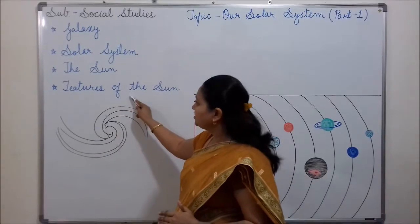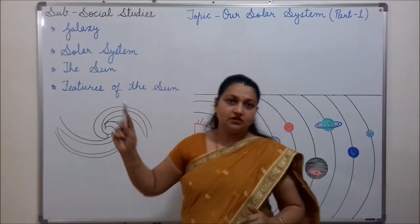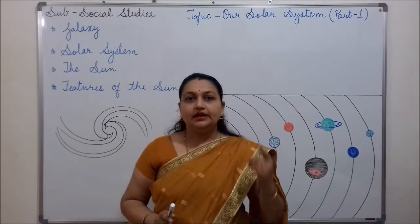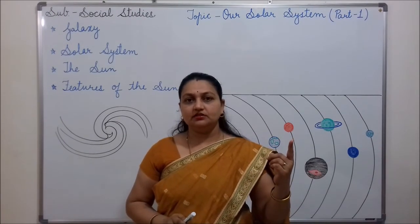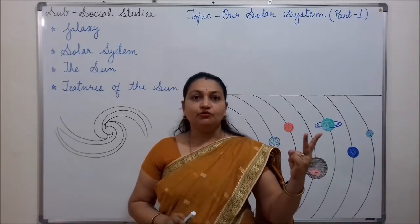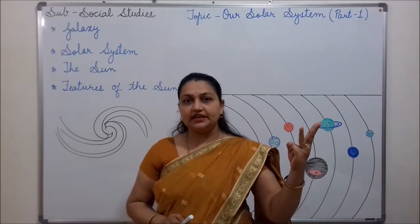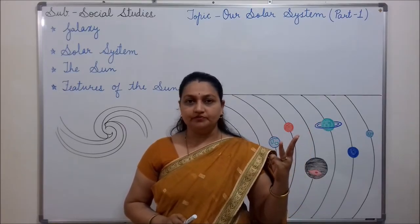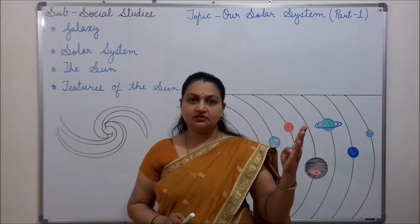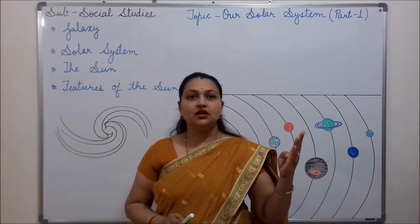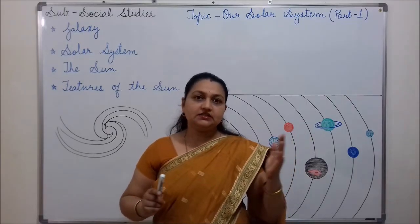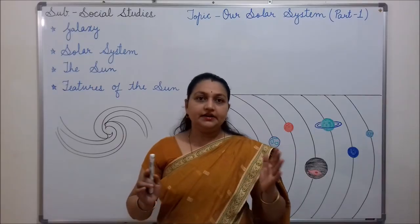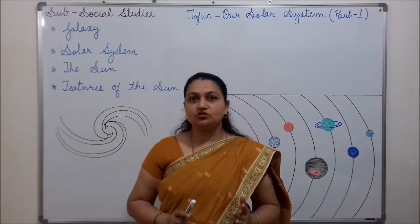Now come to the features of the sun. The sun helps us in many ways. It gives us heat and light. It gives us vitamin D. It provides energy to the plants to prepare their food. It kills germs and dries our clothes. It is an important part of the water cycle, and it is the ultimate source of energy.